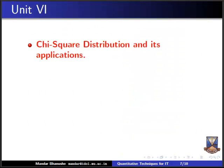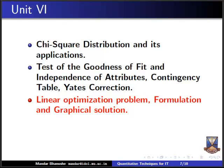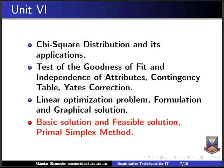In unit six, the last unit, we cover chi-square distribution and its applications, test of goodness of fit and independence of attributes, the contingency table, and Yates correction. Then we move to linear optimization problems — how to formulate a linear programming problem, how to solve it graphically, and an introduction to the simplex method including basic solution, feasible solution, and the primal simplex method.